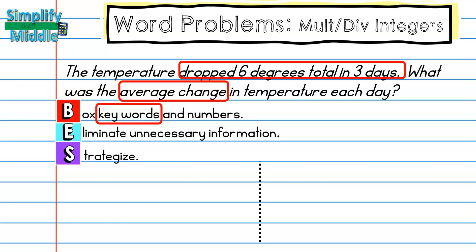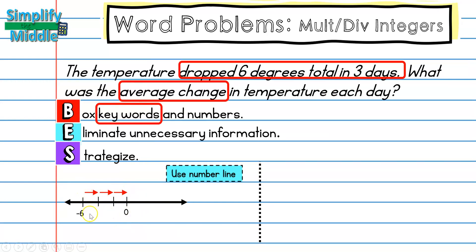Next I'll eliminate any unnecessary information — I don't have any here, so I'll skip that step. For the strategy, I'm going to use a number line. You can draw a picture, make a table, or work backwards for any problem, but I like using a number line for this. Here I have a number line where I'm at negative six and I want to go towards zero in three days, so I have three arrows representing my days.